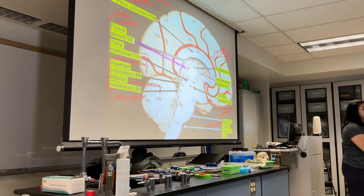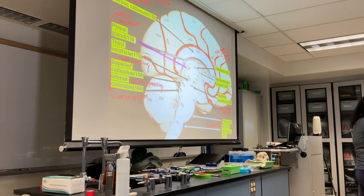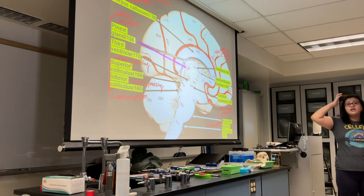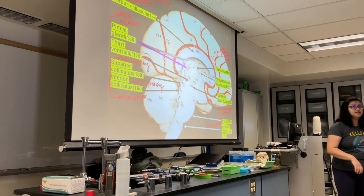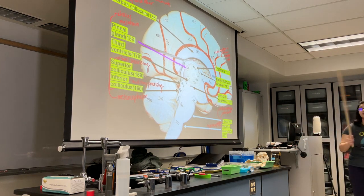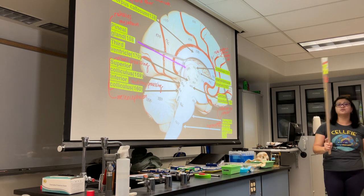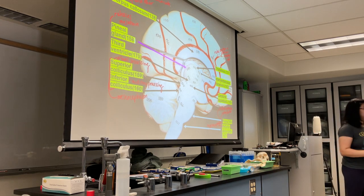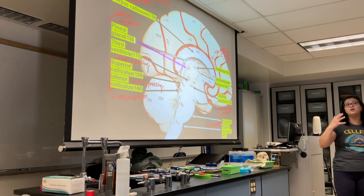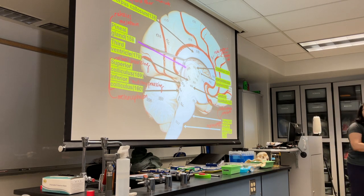What ends up happening is you have two really large lateral ventricles like horns on each side of your cerebrum — they make cerebrospinal fluid. That CSF drains into the third ventricle via the interventricular foramen. The third ventricle drains into the fourth ventricle through the cerebral aqueduct. There's basically a CSF superhighway in your brain and spinal cord.